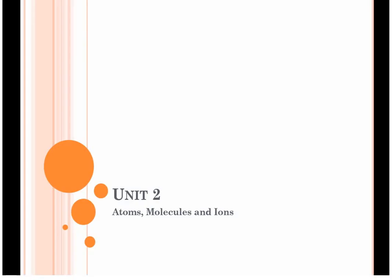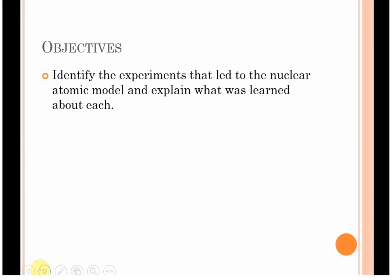This is a continuation of Unit 2. We are now going to be talking about the experiments that led us from Dalton's Atomic Theory to the more modern view of the atom or the nuclear atomic model. The whole objective of this video is to introduce you to the experiments that led to the nuclear atomic model so that you can identify them and explain what was learned by each.